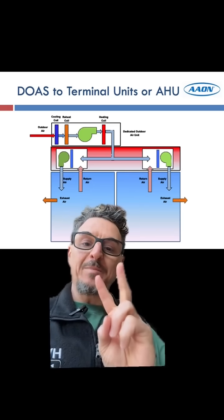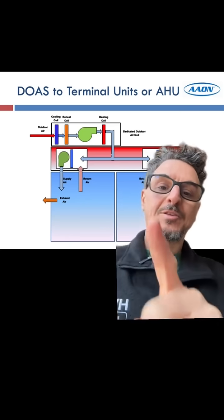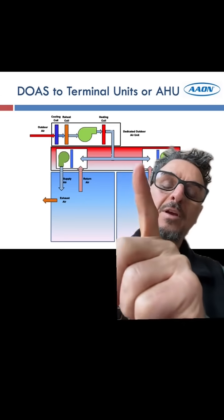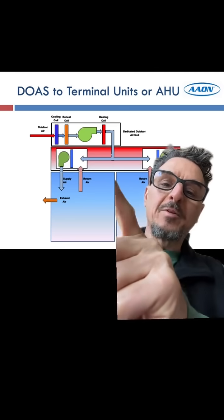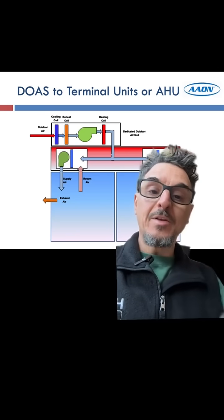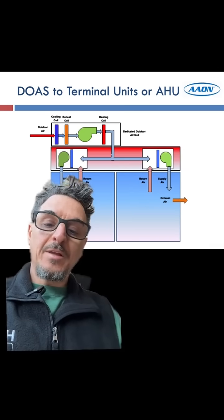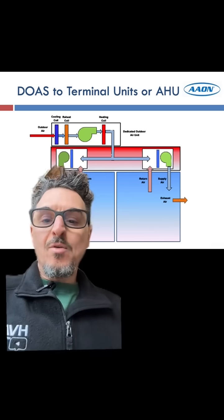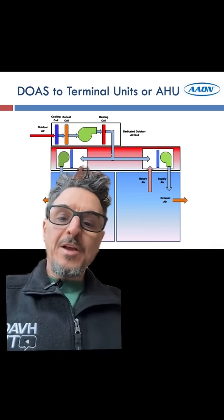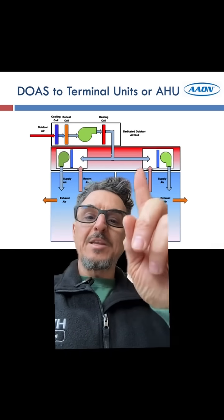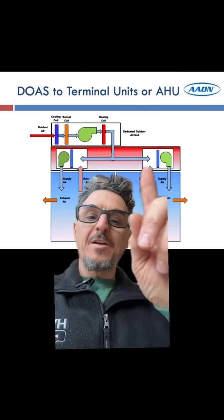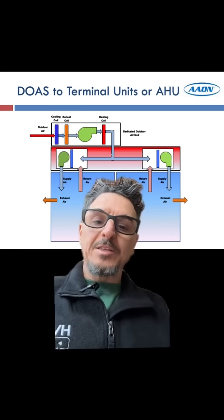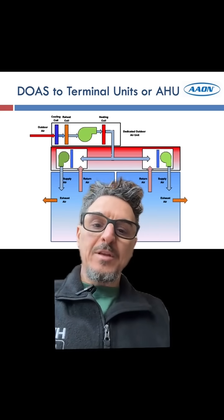Common application number two: instead of providing the air directly to the space, the DOAS is providing it to the back of your terminal units. These could be VRF units, air handling units, or fan coil units. You're providing the dehumidified air directly to the back of the unit, and then the unit is handling the heating and cooling of the space.